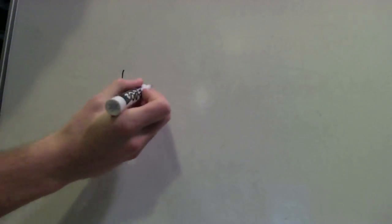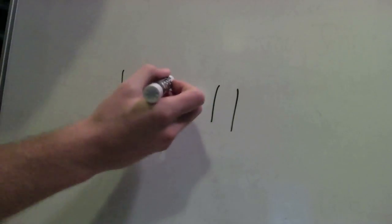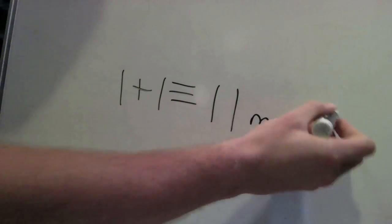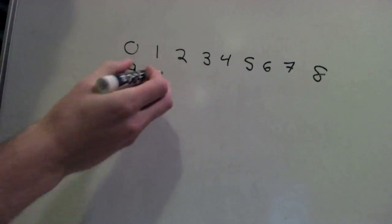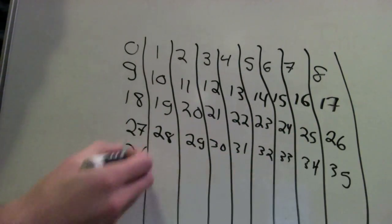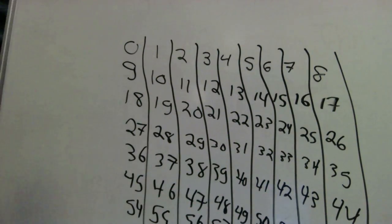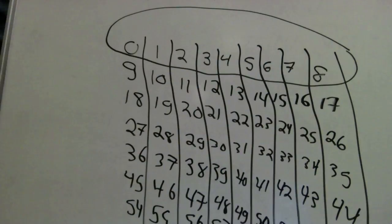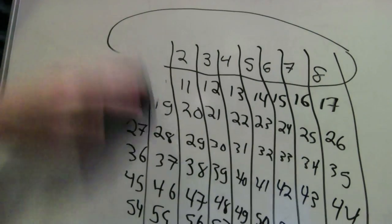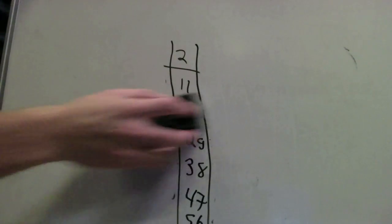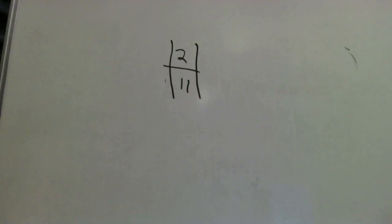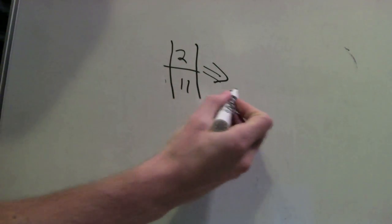One plus one is eleven, mod nine. But what the heck is mod nine? In modular math, the numbers wrap around. There are nine numbers mod nine to be found. Two and eleven, mod nine, are congruent — they are in the same set. See, you can do it. This is just modular math.